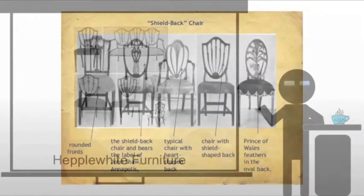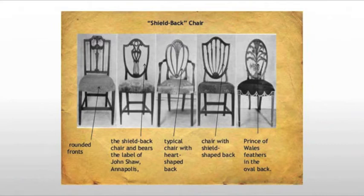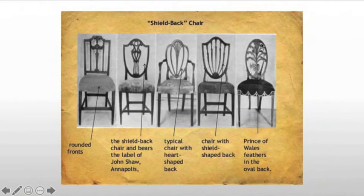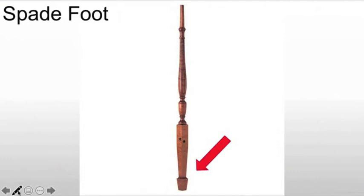Hepplewhite is going to be another great furniture maker, known primarily for his chairs. He has a number of different backs that he will put on these chairs, some of them more decorative than others. For example, the shield back is very common, the heart-shaped back, and here's a Prince of Wales feathers in an oval back — it's a very complicated piece. When we look at his pieces, they commonly incorporate a spade foot, which is basically a squared-off piece that tapers to almost a point.